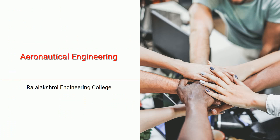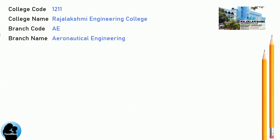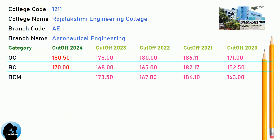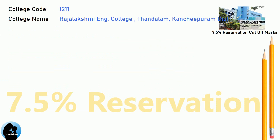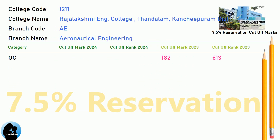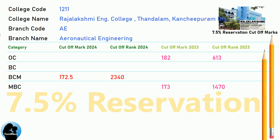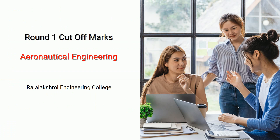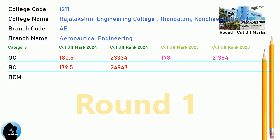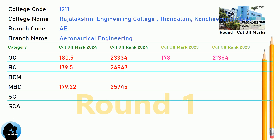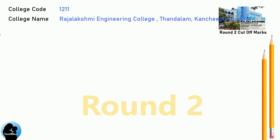DNA Cut-Off for Raj Lakshmi Engineering College in Aeronautical Engineering. DNA 7.5 Reservation Cut-Off for Raj Lakshmi Engineering College in Aeronautical Engineering. DNA Round 1 Cut-Off for Raj Lakshmi Engineering College in Aeronautical Engineering. DNA Round 2 Cut-Off for Raj Lakshmi Engineering College in Aeronautical Engineering.